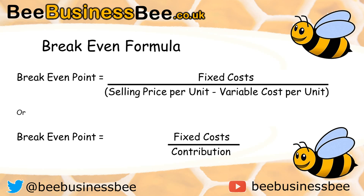The lower section of that formula is typically called the contribution, which is why you may see the formula expressed as fixed cost divided by the contribution. The contribution is effectively the gross profit of each item — how much it is contributing towards the fixed costs. So when you take the variable costs away from the selling price, you work out how much each item contributes towards covering those fixed costs.